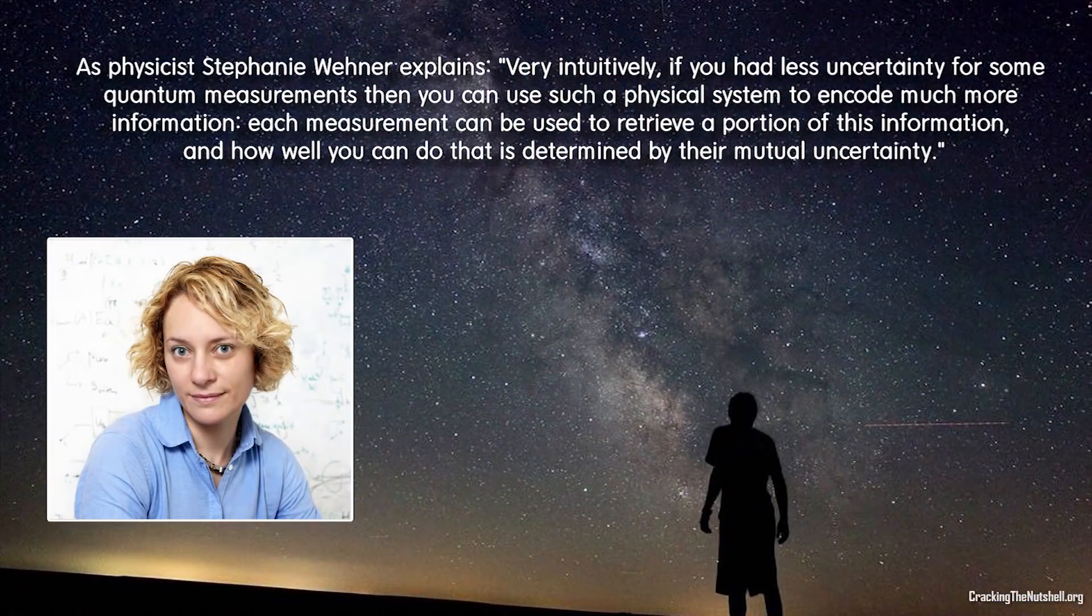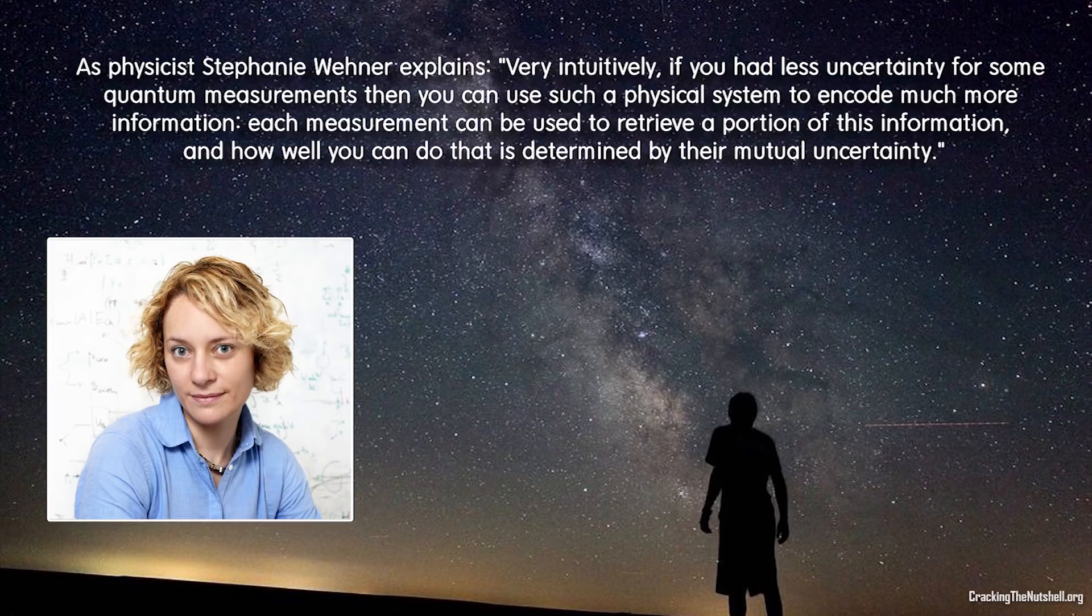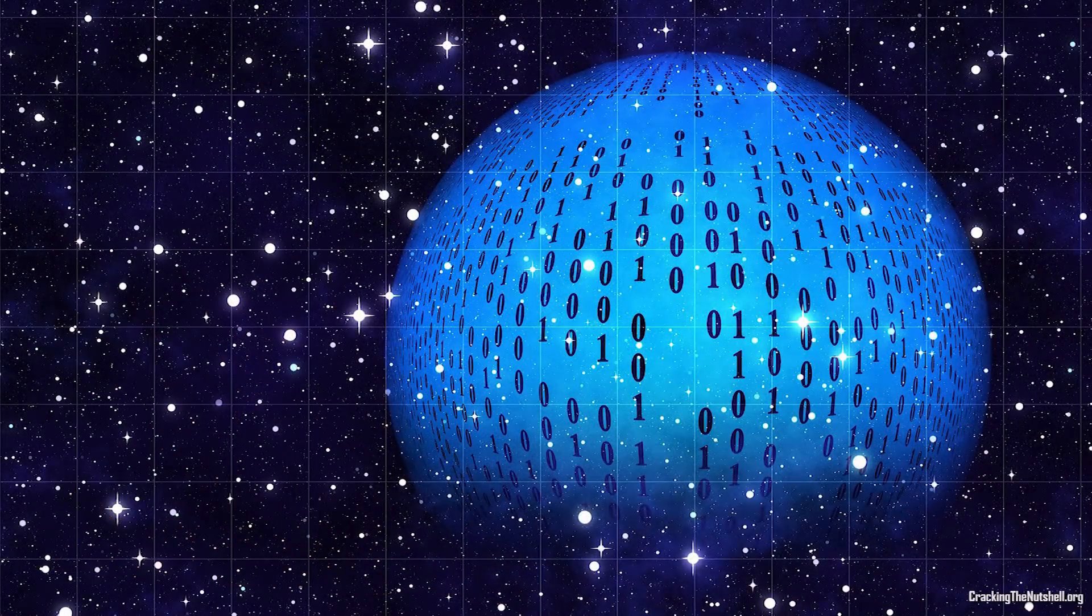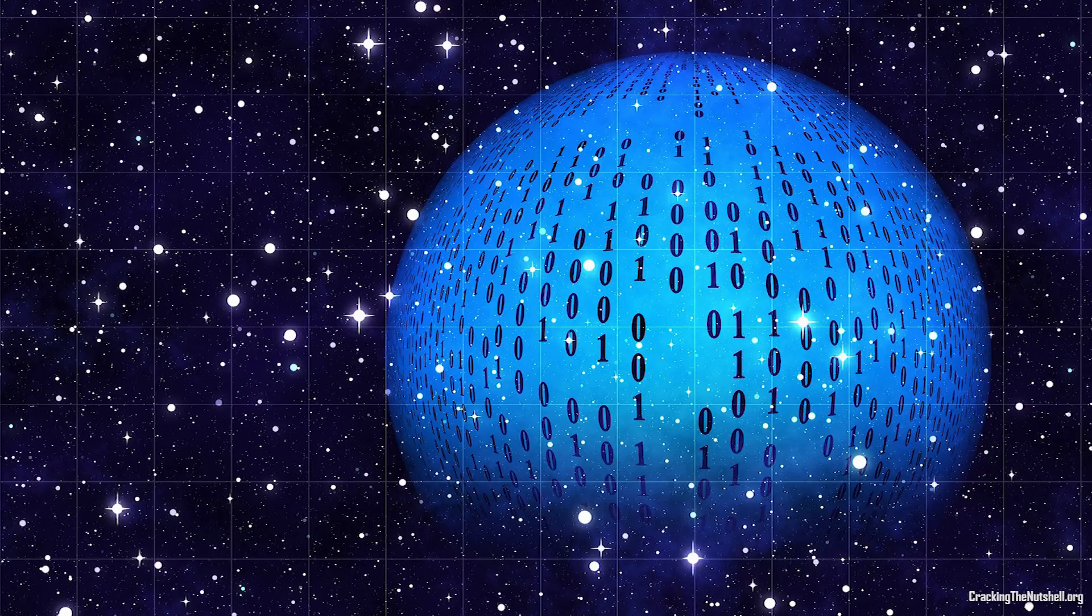As physicist Stephanie Weiner explains, very intuitively, if you had less uncertainty for some quantum measurements, then you can use such a physical system to encode much more information. Each measurement can be used to retrieve a portion of this information, and how well you can do that is determined by their mutual uncertainty. Put quite simply, more uncertainty means nature can get away with storing less information, which of course brings us back to the ideas of efficiency and optimization.